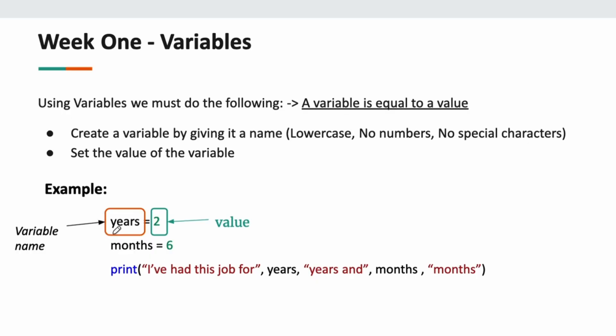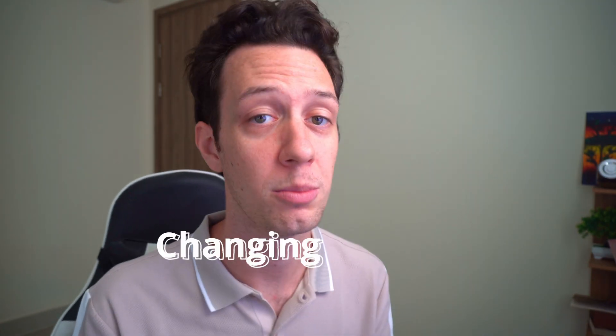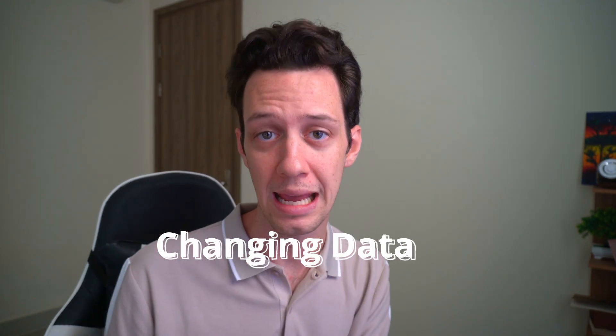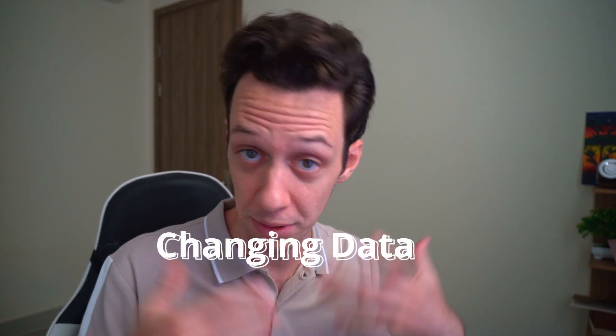So, here you can see I have two variables, years and months. The value of years is two. The value of months is six. I'm then using the Python print function, and I'm printing off a string, and I'm using my variables. We work with variables when we work with changing data, data that could change or potentially change in the future.